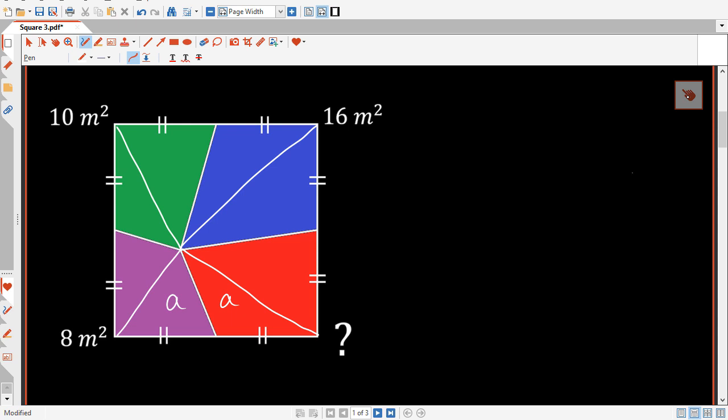I will just repeat the same thing for these two triangles because they also have the same base and they share the same height, so I will label their areas as b. And here as c, c, and this is d, d.